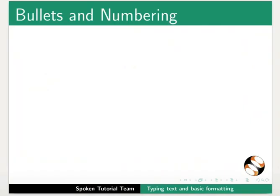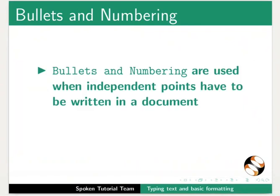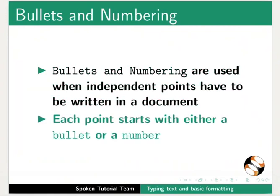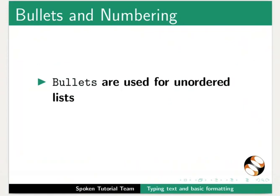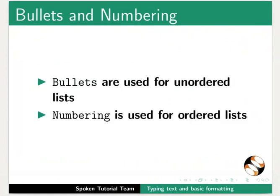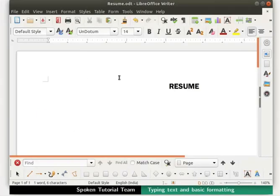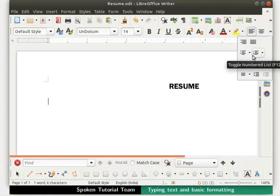Now let us learn about bullets and numbering. Bullets and numbering are used when independent points have to be written in a document. Each point starts with either a bullet or a number. Bullets are used for unordered lists; numbering is used for ordered lists. In the formatting toolbar we can see separate icons for bullets and numbering.